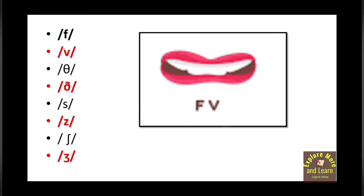Just pronounce /f/ — you will see your lower lip is touching your upper teeth. When you say /f/, your lower lip is touching your upper teeth and air pressure is built up. It is partially blocked when you try to say words like 'fan'. First air pressure is built up, then the air is partially blocked, and the blockage is created between the lower lip and the upper teeth. Then air is released through a narrow passage.